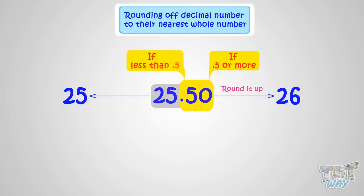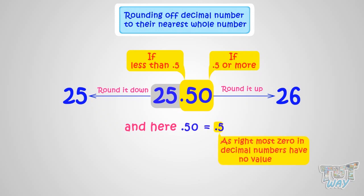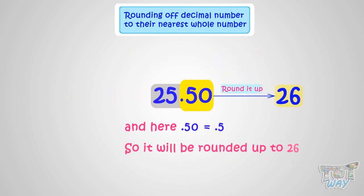And if the decimal number is less than 0.5, we round it down. Here, the decimal portion is 0.50. 0.50 equals 0.5, as 0.5 and 0.50 are one and the same — zeros in the rightmost places of decimal numbers do not matter. So this number will be rounded up to 26.